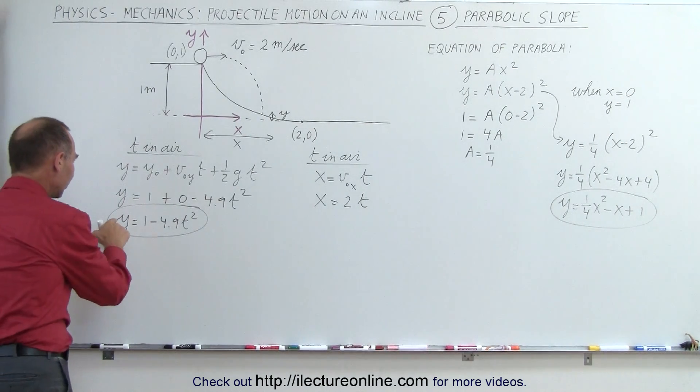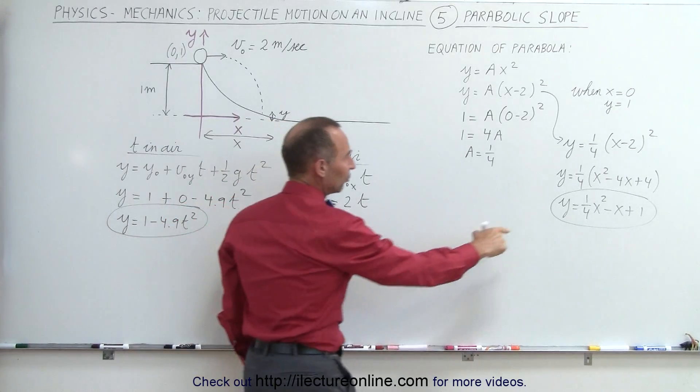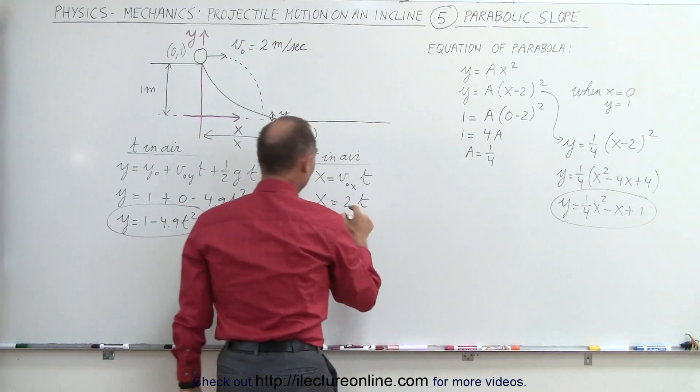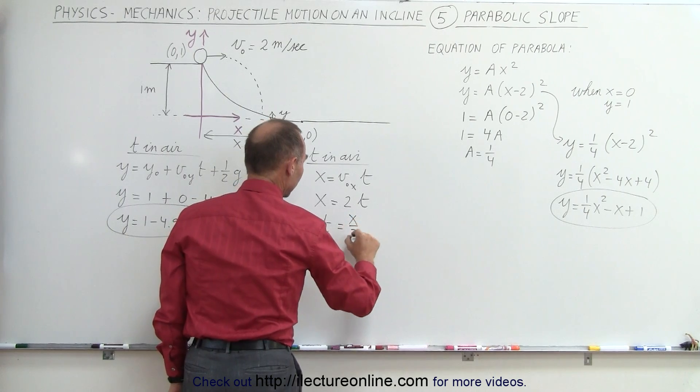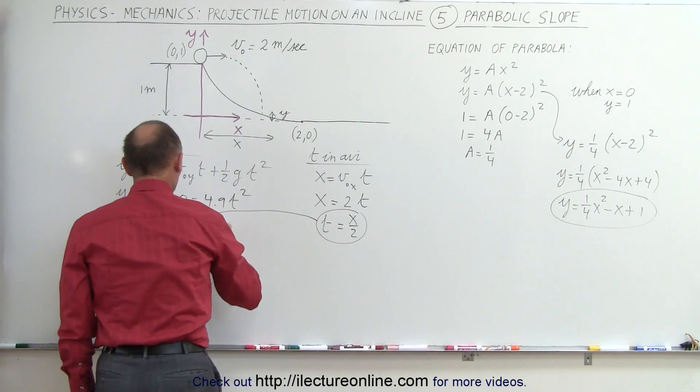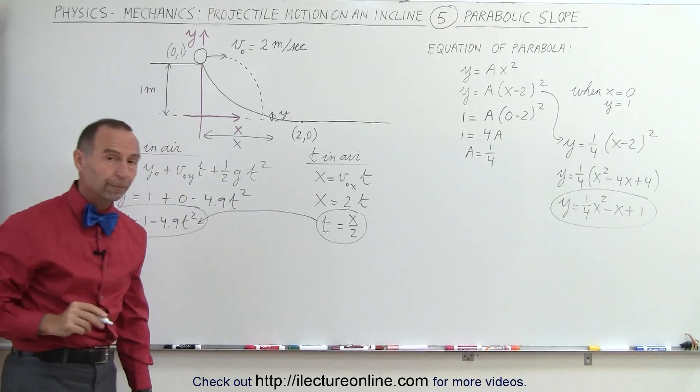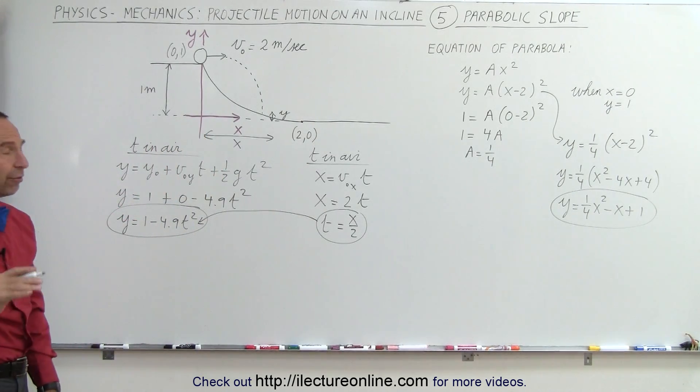What we can do is we can replace this y by this y right here in terms of x. And then we can solve this equation. t equals x divided by 2 to replace every t in the equation by x over 2. When we do that, we get the following.